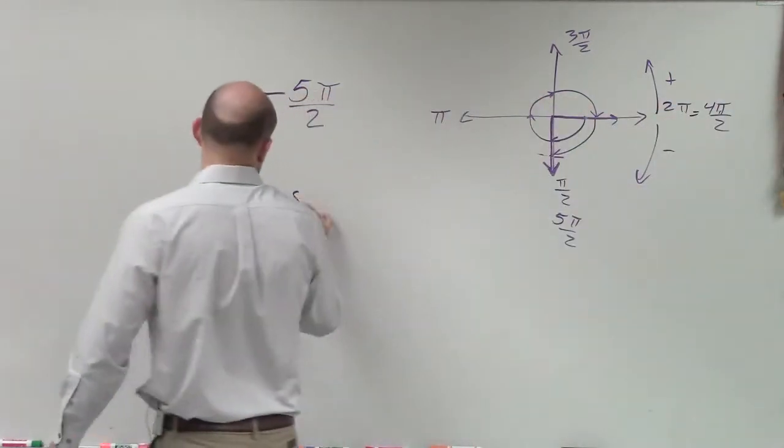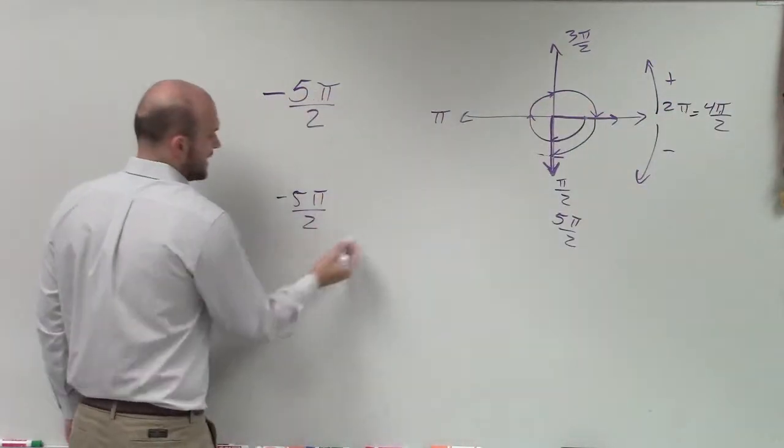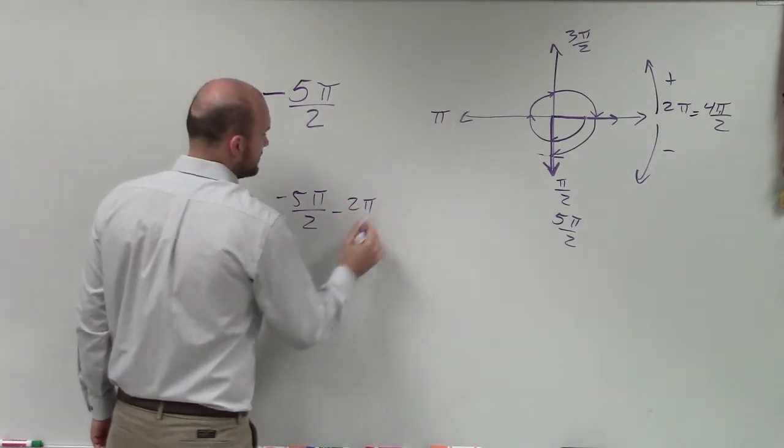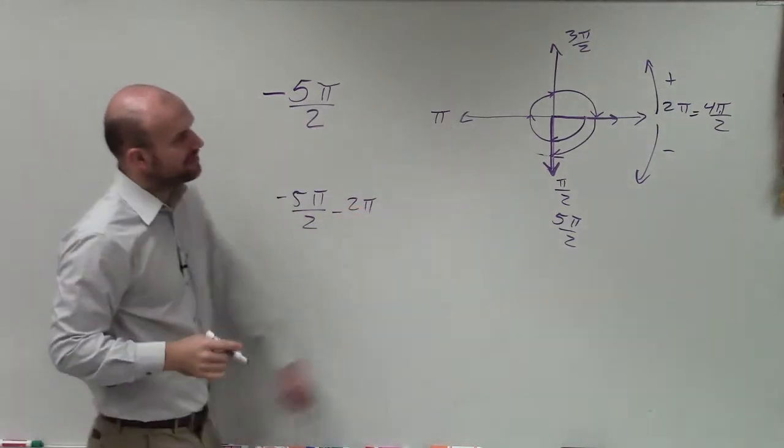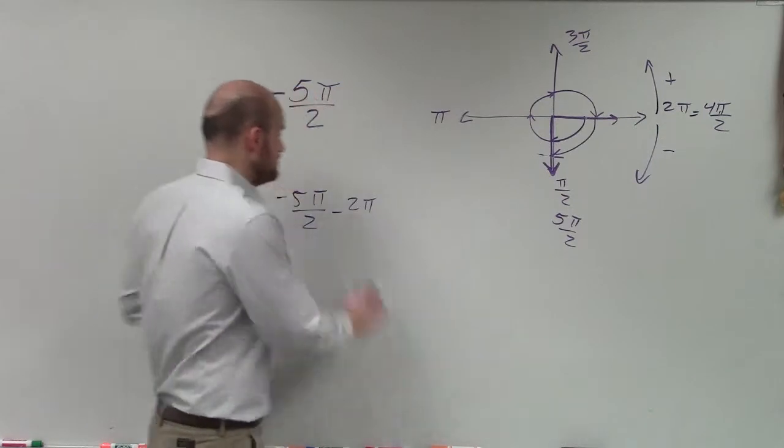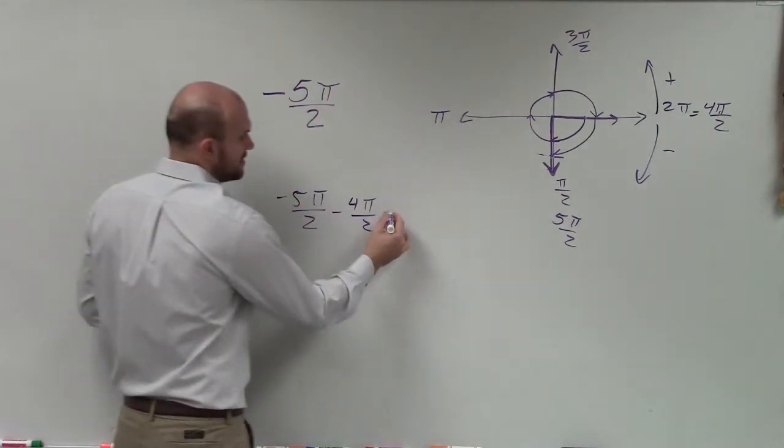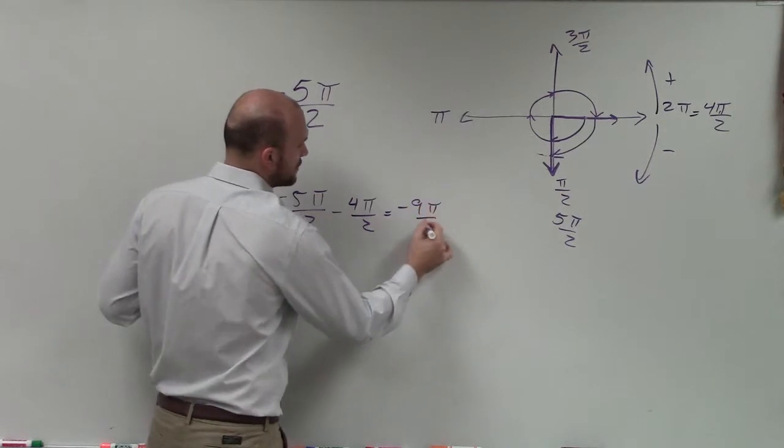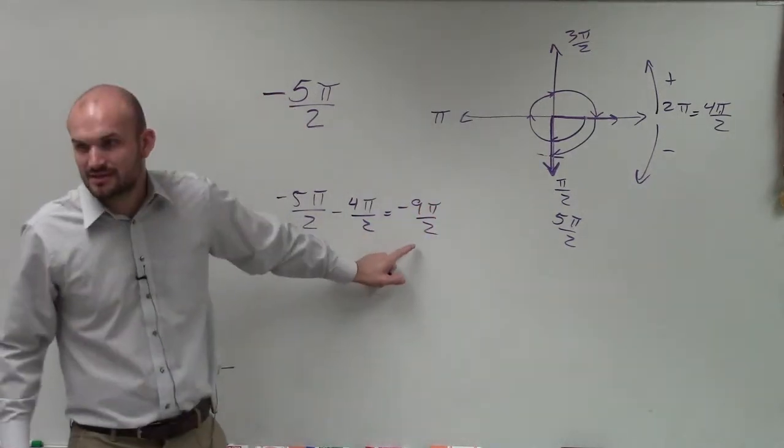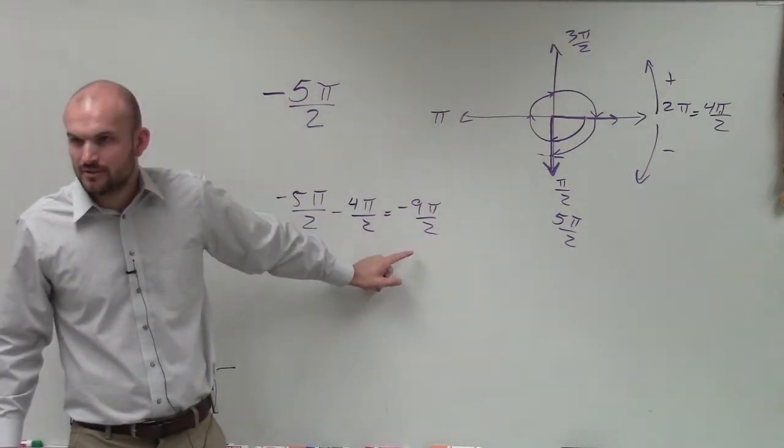So if I take negative 5π over 2 and I subtract 2π, well remember, negative 2π is the same thing as 4π over 2. So let's rewrite it as 4π over 2, because then they have the same basis. That equals negative 9π over 2. Is that the smallest coterminal angle we could do?